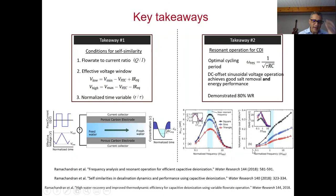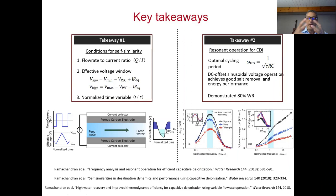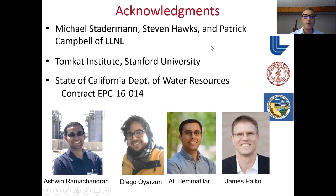Key takeaways: we identify variables for self-similar behavior among all CDI cells, and couple a first-order mass transport model with a first-order electrical circuit model. Their coupling gives second-order type behavior, which identifies a resonant frequency. We also showed how to achieve very high water recovery. With that, I'd like to thank my coauthors, funding sources — the Tomkat Institute at Stanford and the State of California Department of Water Resources — and I'd be happy to take any questions.